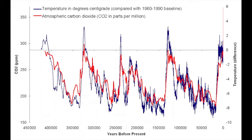Over the last 650,000 years, a period of extensive study for the presence of atmospheric CO2, we have experienced multiple regular periods of major glaciation and seven ice ages. Within the last 20,000 years, since the peak of the last major glaciation, 95% of Canada was covered in ice, over three kilometres thick in many places.